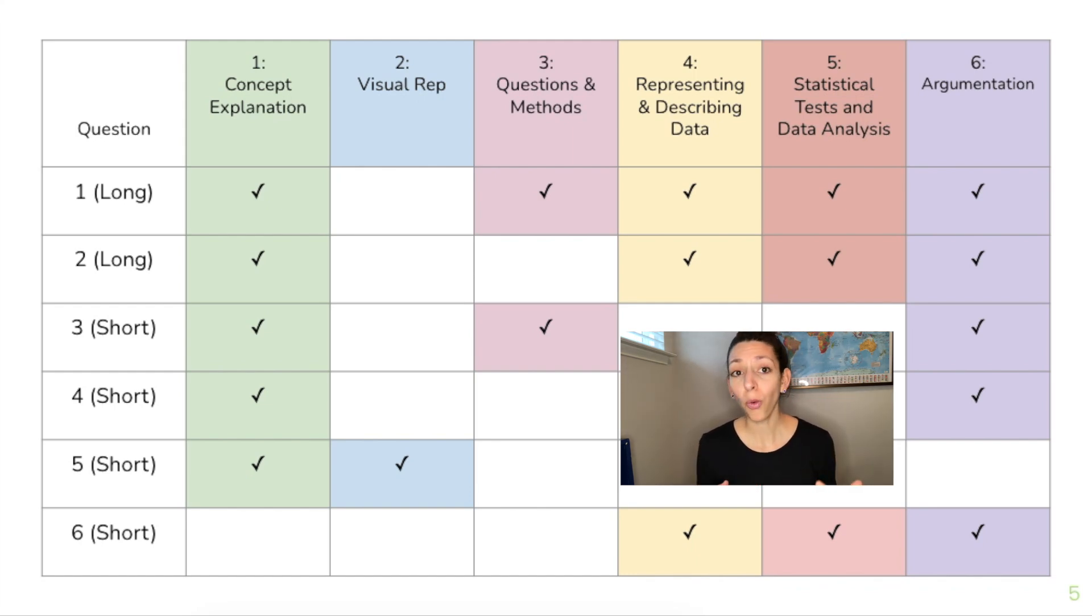So since you know what's going to show up on each question, you also know what you might need to practice. Don't spend all of your prep doing practice for visual representation because you know that's only going to come up on question number five. But you can also see that concept explanation and argumentation, so justifying, evaluating, making claims, that comes up a lot. So those are things that you're definitely going to want to practice and look for in old FRQs to see exactly what that means for the exam.